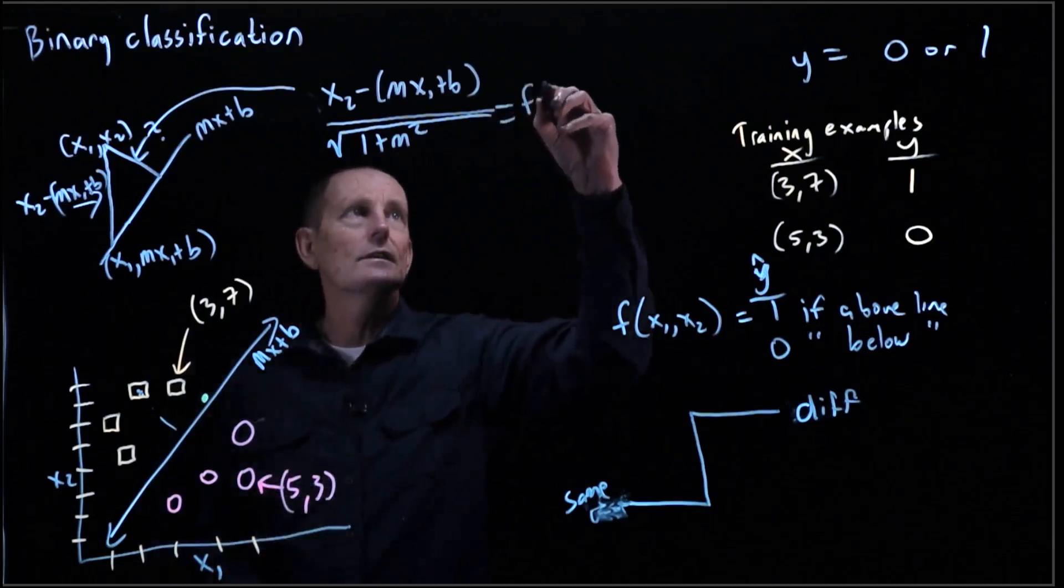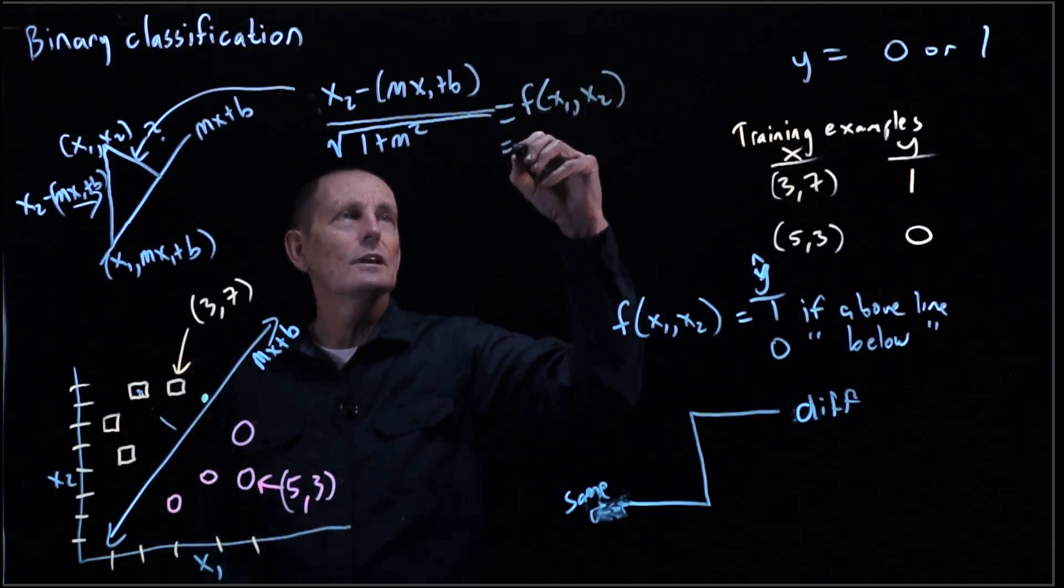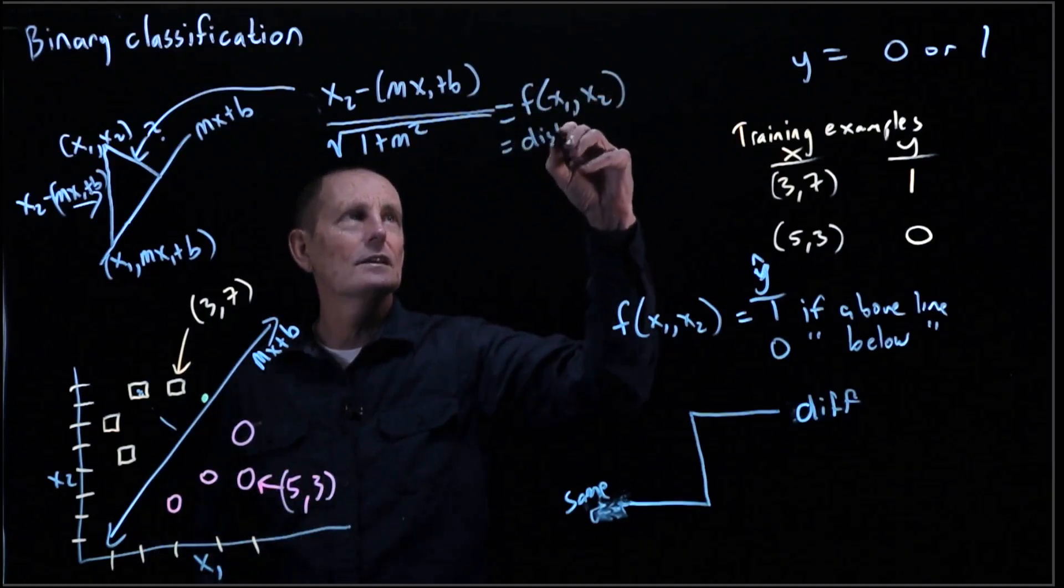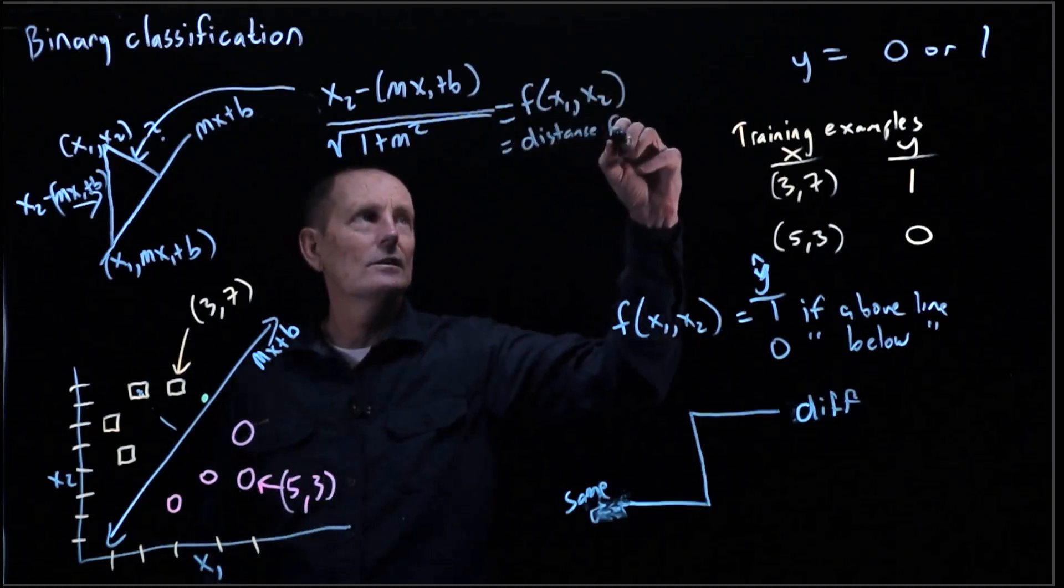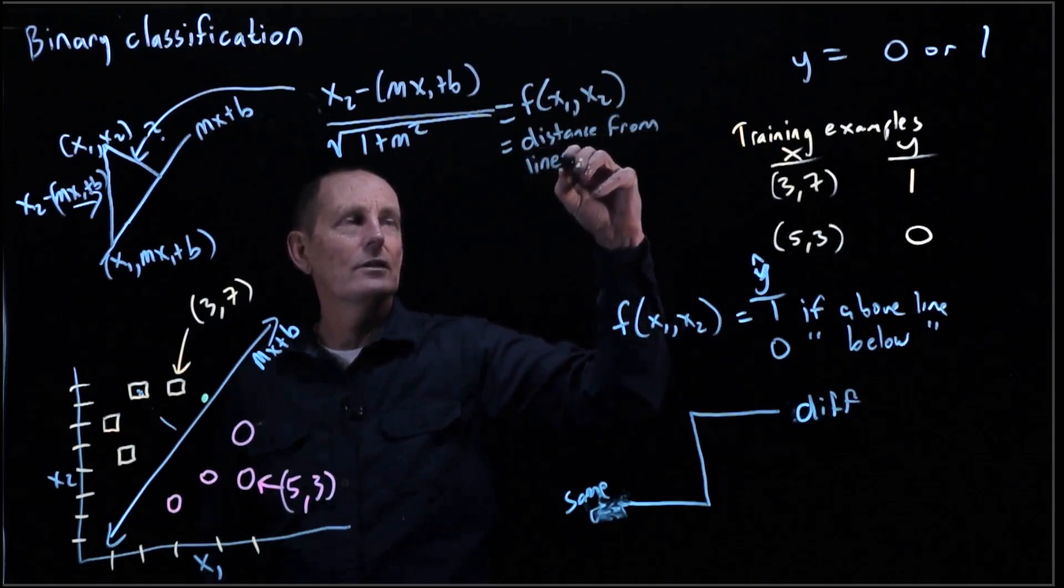So this is f of x1 comma x2. And this equals the distance from the line.